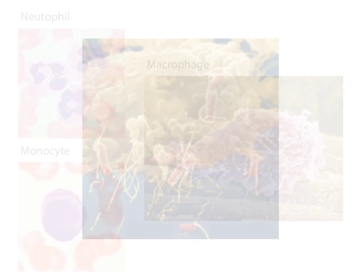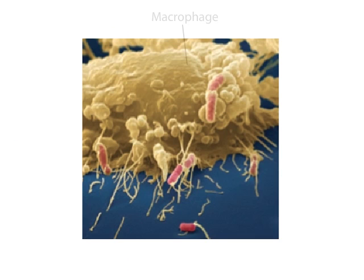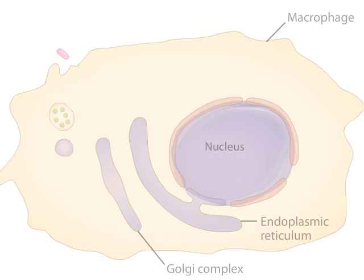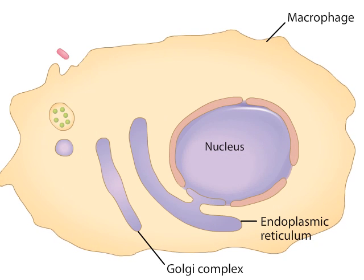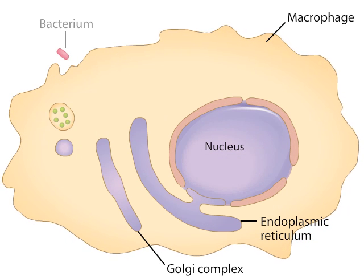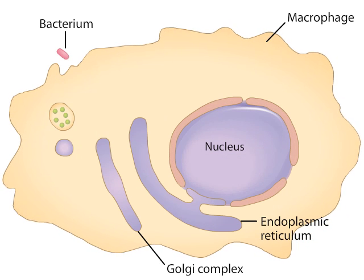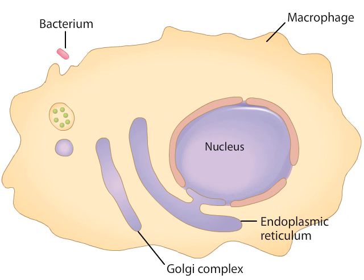Like monocytes and neutrophils, macrophages are also phagocytic. This scanning electron micrograph shows a macrophage using long membrane extensions to engulf bacteria. Macrophages are the cells most likely to make first contact with invading pathogens. They have two functions.